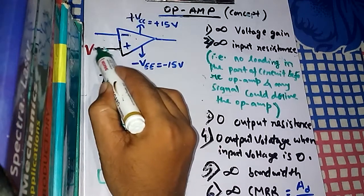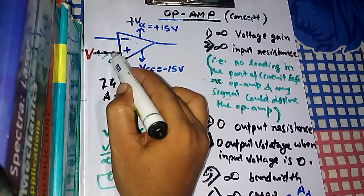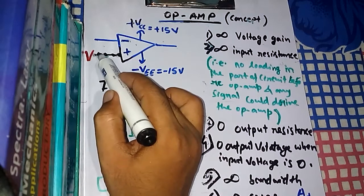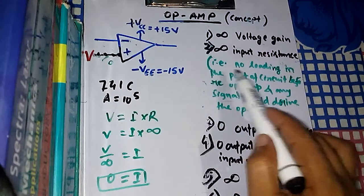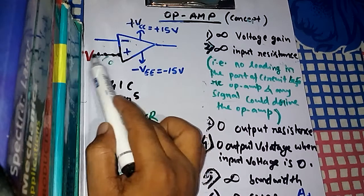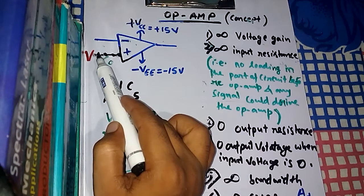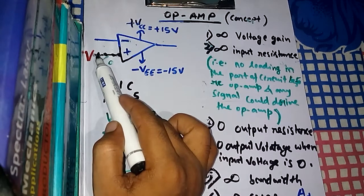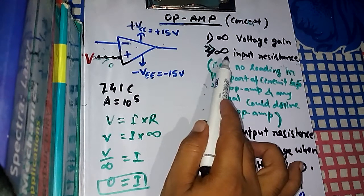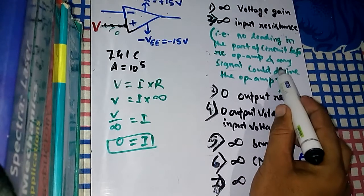Because of no loading, the voltage V is the same at every point in the circuit — at this point V, at this point V, at every point V. The whole circuit has the same voltage throughout. So no loading in the part of the circuit before the op-amp means the voltage is not dropping and not converting into current.